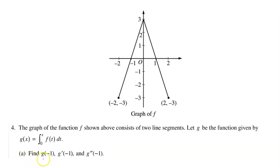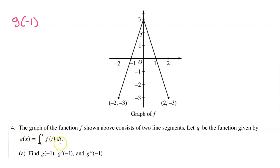For part a, we are asked to evaluate g, g prime, and g double prime at negative one. Let's start with g at negative one. This means we will simply substitute negative one for x in this expression, so we will have the integral from zero to negative one of f at t dt.